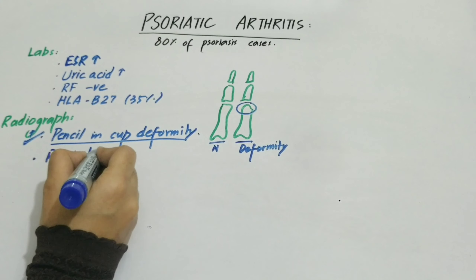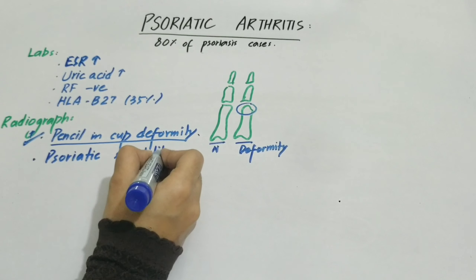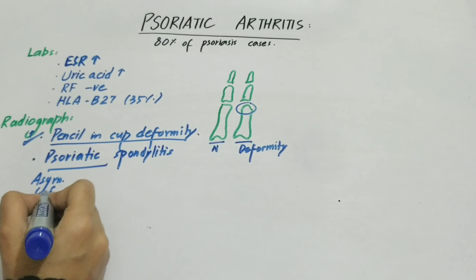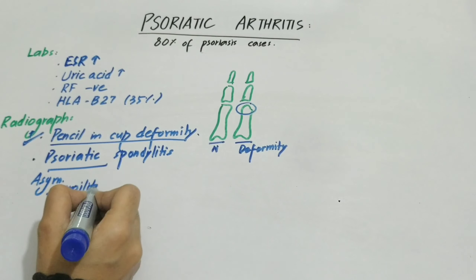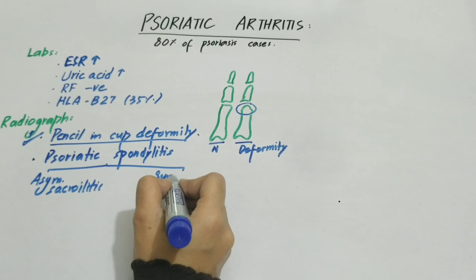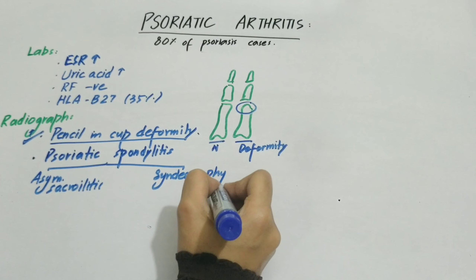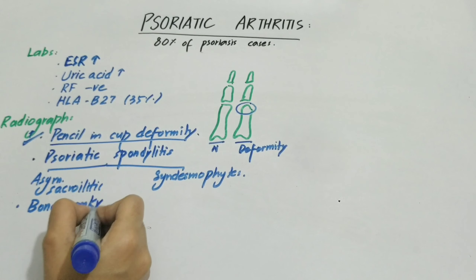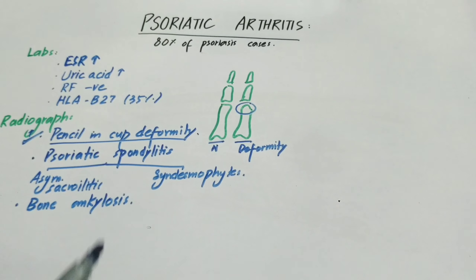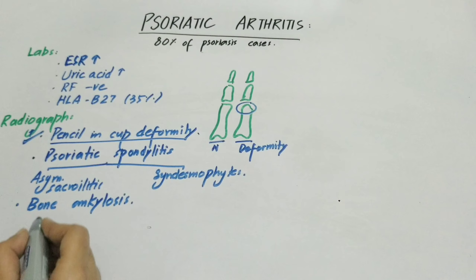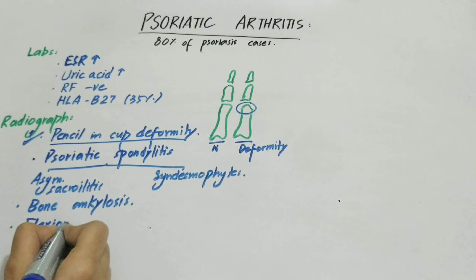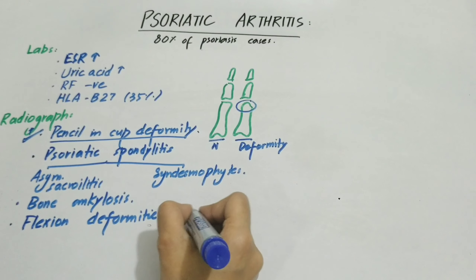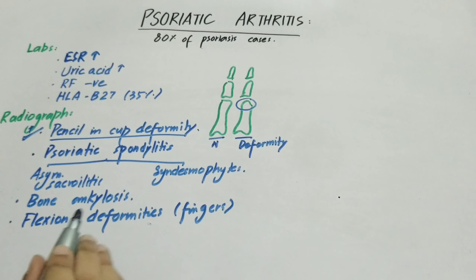In psoriatic spondylitis, we have inflammation, and two key things to look at: first, asymmetrical sacroiliitis — inflammation in one side of the SI joint. Second, extra bony growth with bone ankylosis and joint fusion. Flexion deformities are also common, seen in the DIP joints of fingers, including the ring finger. All these flexion deformities are characteristic of psoriatic spondylitis.